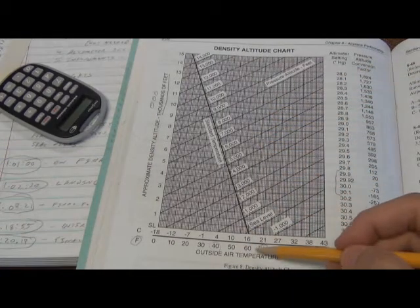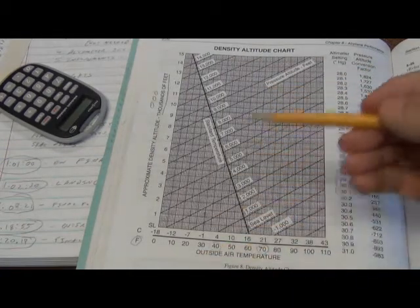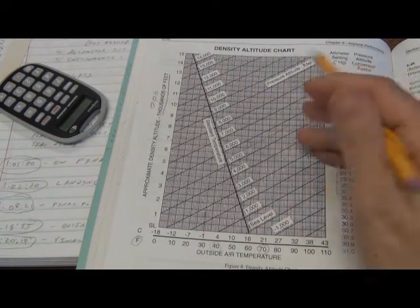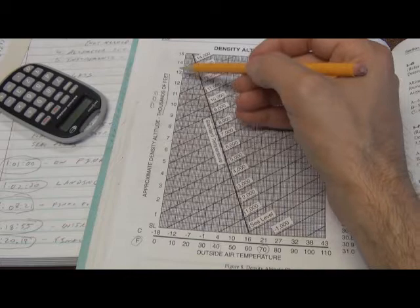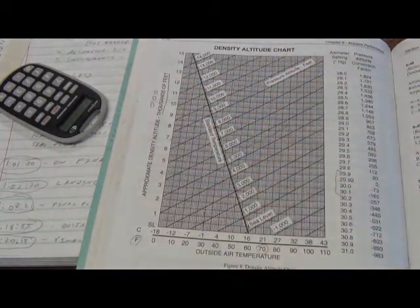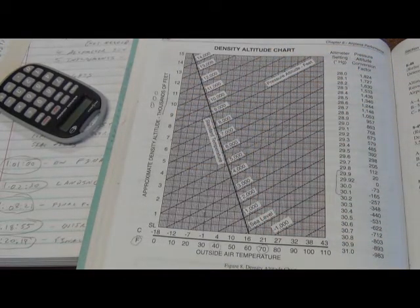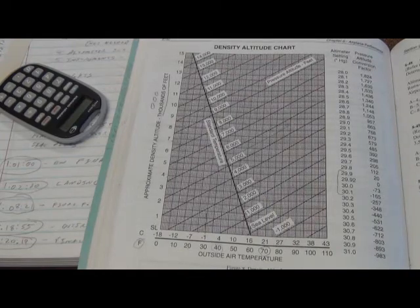So you'll always be given the temperature. You'll either find or just be outright given the pressure altitude. You plug those numbers in here, you look to the left, and then you find out your density altitude, and you answer the question. Okay, let's move on to a question from the test book.